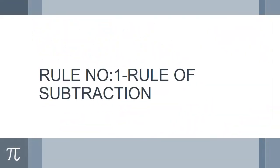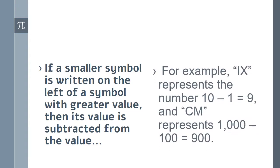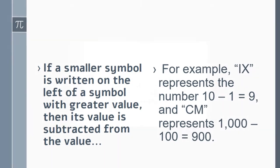We have some rules for writing Roman numerals. Rule number 1: Rule of Subtraction. If a smaller symbol is written on the left of a symbol with greater value, then its value is subtracted from the value. For example, IX represents 10 minus 1 equals 9, and CM represents 1000 minus 100 equals 900.